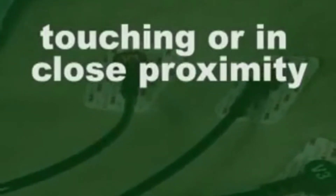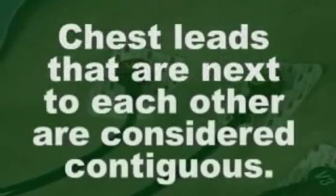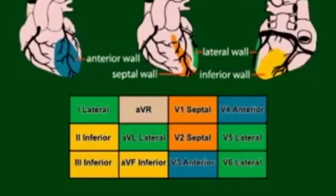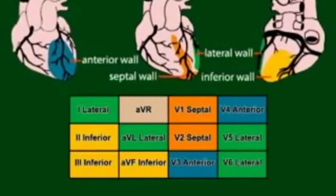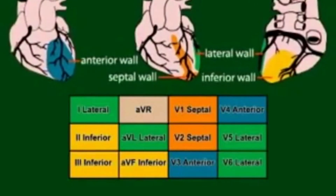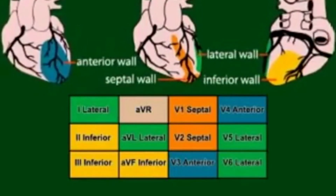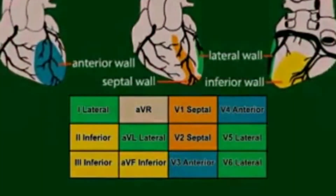The term contiguous refers to touching or in close proximity. Chest leads that are next to each other are considered contiguous. For example, V2 and V3 are considered contiguous because V2 points to the septal wall and V3 points to the anterior aspect of the heart, which are in close proximity. Likewise, V4 and V5 are considered contiguous for the same reason.